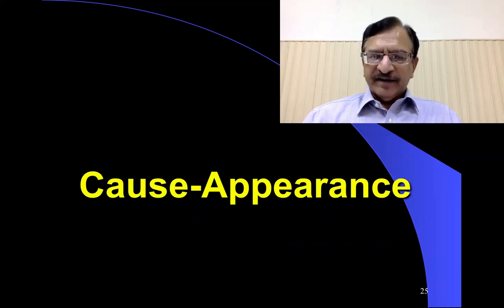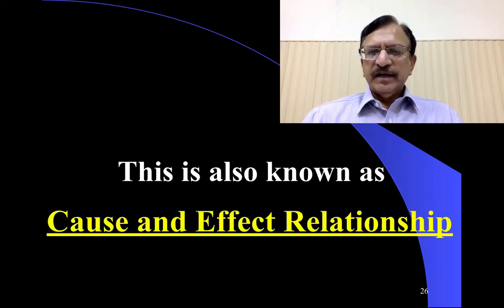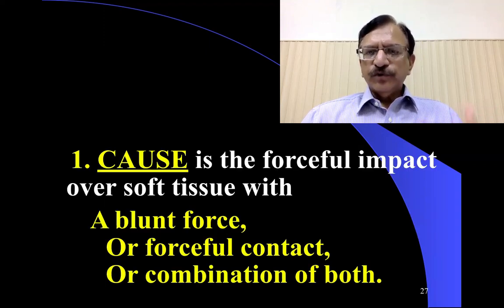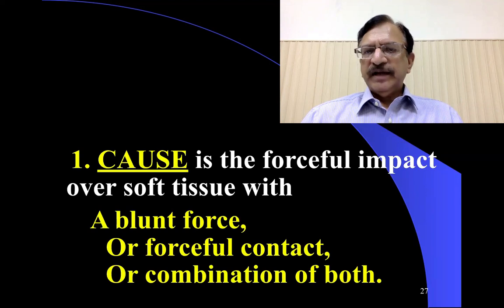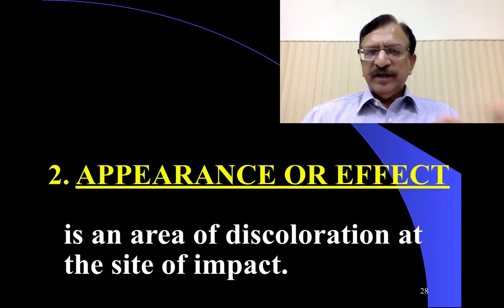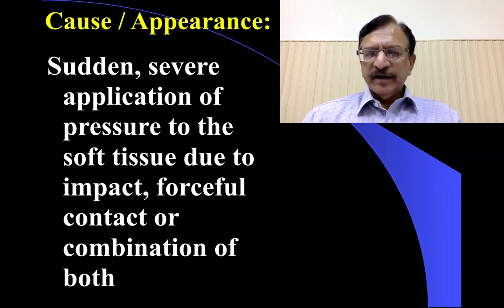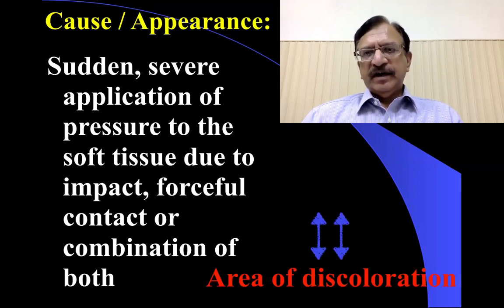Regarding the cause and effect relationship, also called the cause and appearance relationship: the cause is the forceful impact over any soft tissue with a blunt force, or with forceful contact, or a combination of both — that may be impact, pressure, or firm contact. The effect is the area of discoloration at the site of impact, produced by sudden and severe application of pressure to the soft tissues.